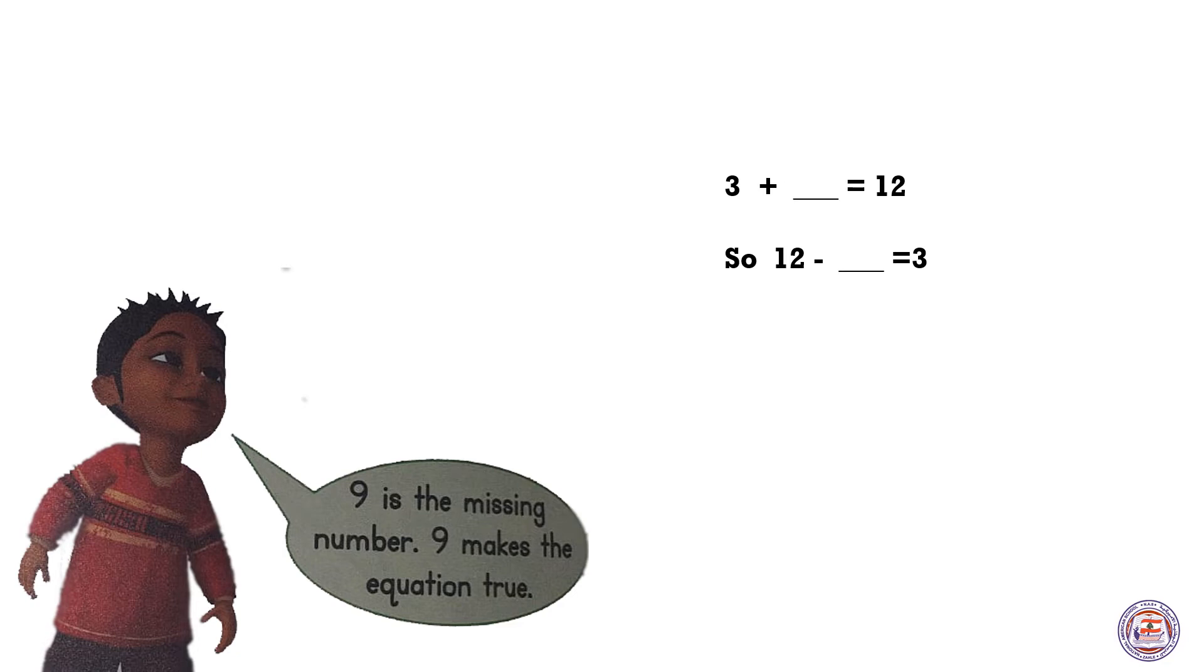You can also use addition to find the missing number. How? We can use a related fact to find an unknown number. Related facts use the same numbers in different order. 3 plus an unknown number equals 12, so 12 minus an unknown number equals 3. Because we can add in any order, we can say the unknown number plus 3 equals 12, so 12 minus an unknown number equals 3. And we know that 9 is the missing number.